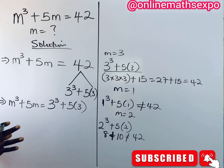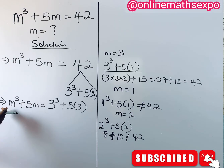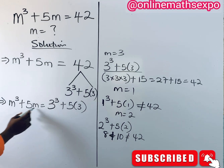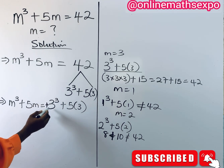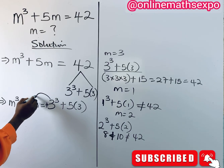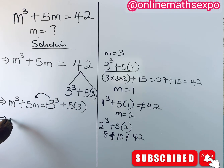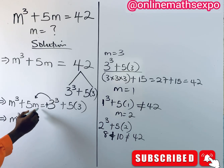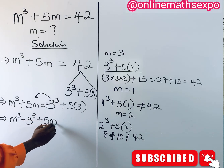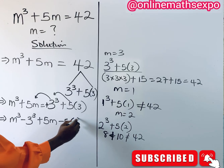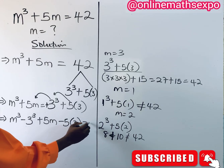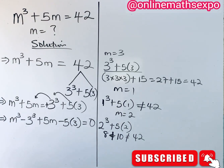Now we collect like terms together — the cube terms together and the linear terms together. Since the right-hand side terms are positive, we subtract them to bring everything to the left. We get m³ minus 3³ plus 5m minus 5 times 3 equals 0.